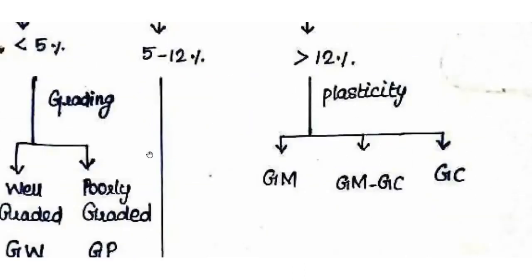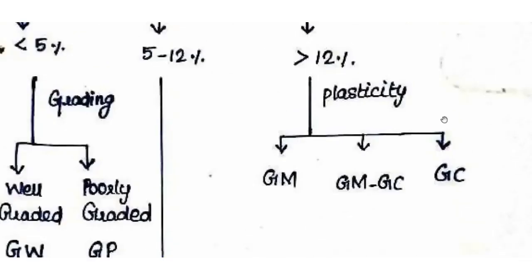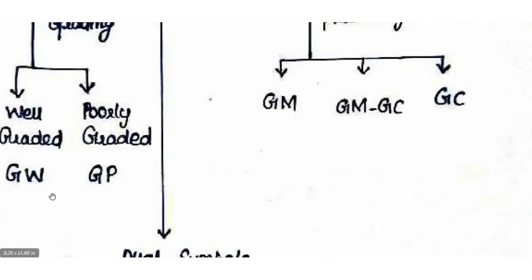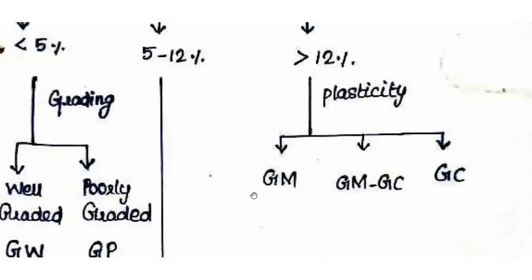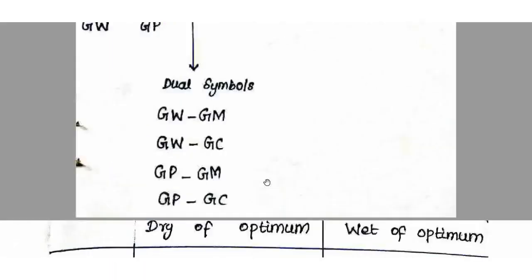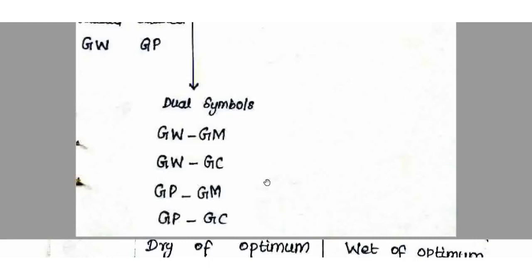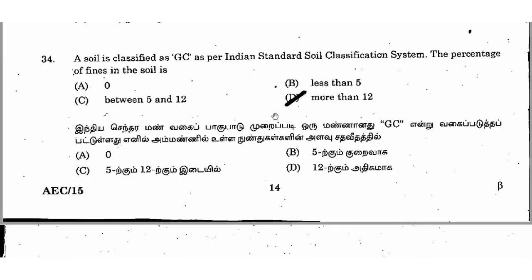We can classify this as GC, GM, GW (well-graded). For 5 to 12% fines, classification considers both grading and plasticity characteristics, giving well-graded gravel (GW) or poorly-graded gravel (GP). Greater than 12% fines corresponds to silty gravel (GM) or clayey gravel (GC). So GC corresponds to greater than 12% fines — the right answer is option D, more than 12%. The same classification applies for both gravel and sand.